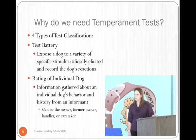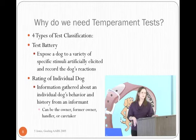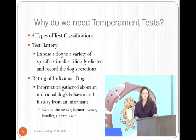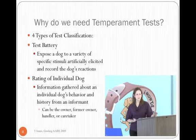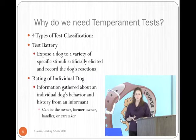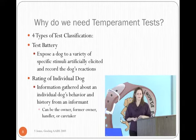There's also rating an individual dog, and that's where we get information from that individual pet's behavior historically from some type of informant. And that can be anything from the owner, the former owner who's relinquishing the animal, a handler, or even a caretaker of that animal.